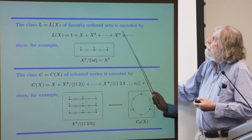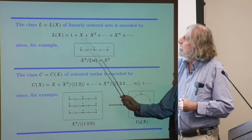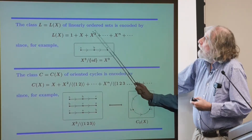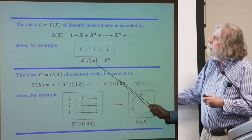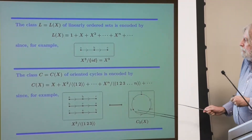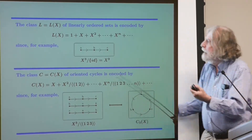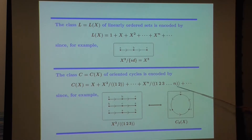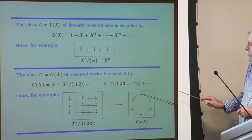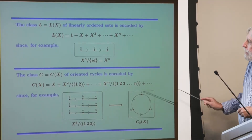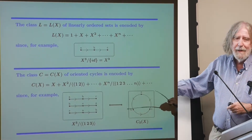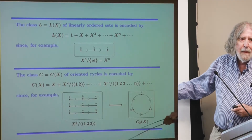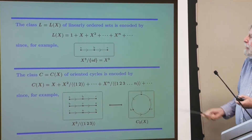The class of all linearly ordered sets — the identity is the only automorphism of a linearly ordered set — is denoted by X^N. Ordinary power series are connected with linearly ordered N-sets. Taking N equal 1, 2, 3, etc., we have the geometric series, which encodes all linearly ordered sets. The class of all oriented cycles is denoted by a combinatorial power series where you divide by the N cyclic shifts. A cycle on three elements is an equivalence class of lists modulo cyclic shifts.